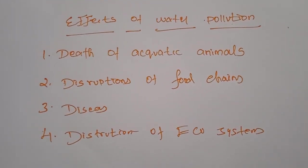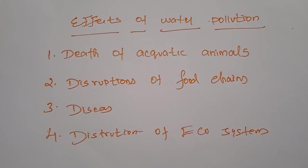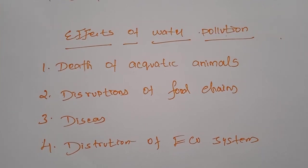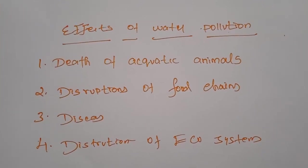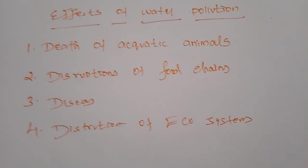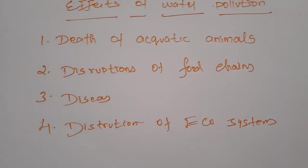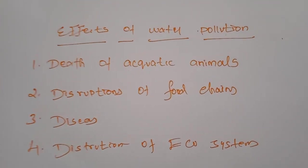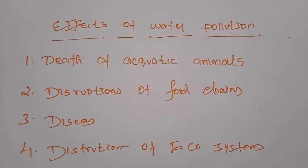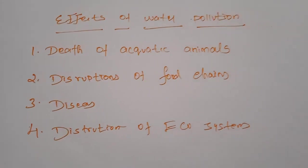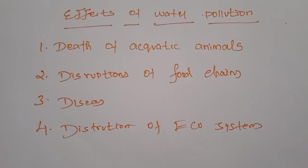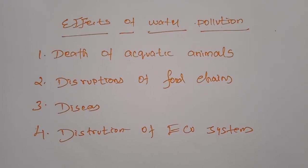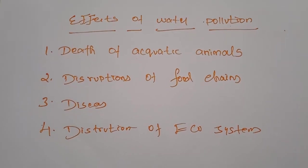Next, disruption of food chains. Pollution disrupts the natural food chain. Pollutants such as lead and cadmium are eaten by tiny animals, which are then consumed by fish, and the disruption continues at all higher levels. If fish containing chemical items are taken as food by human beings, our health will also be affected. Wherever water-polluted animals are affected, all the food chains will be disrupted.